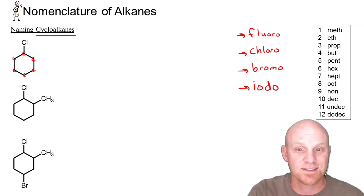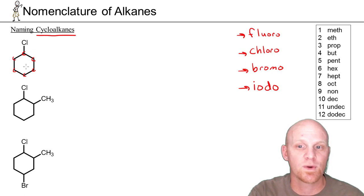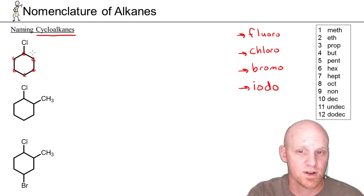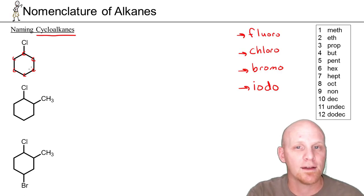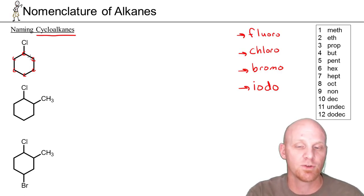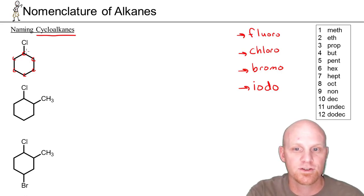In this first example, we have six carbons as our parent chain in a ring — that's cyclohexane. We've got a chloro substituent. It's the only substituent, and notice that with the ring having no ends, we get to choose where carbon 1 goes. If you only have one substituent, you're going to make that carbon number 1.